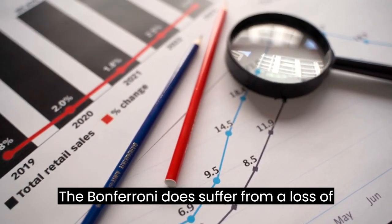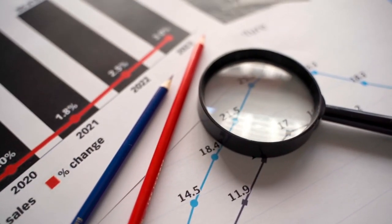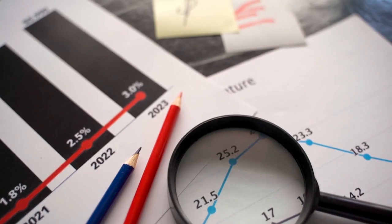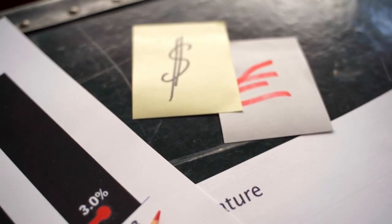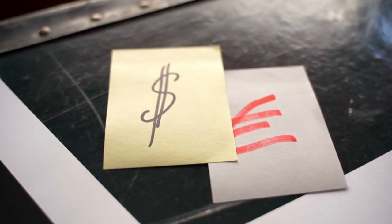The Bonferroni does suffer from a loss of power. This is due to several reasons, including the fact that type 2 error rates are high for each test. In other words, it overcorrects for type 1 errors.